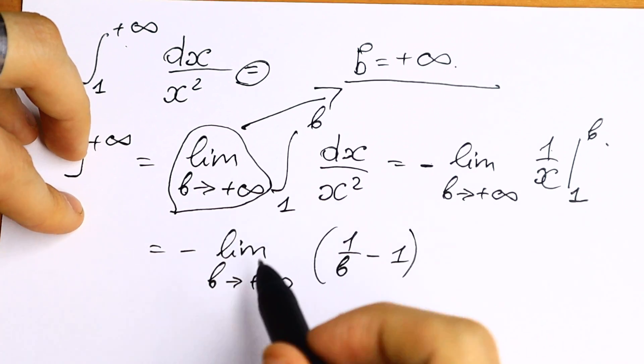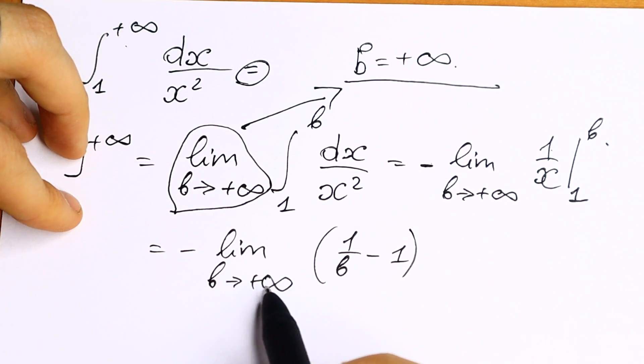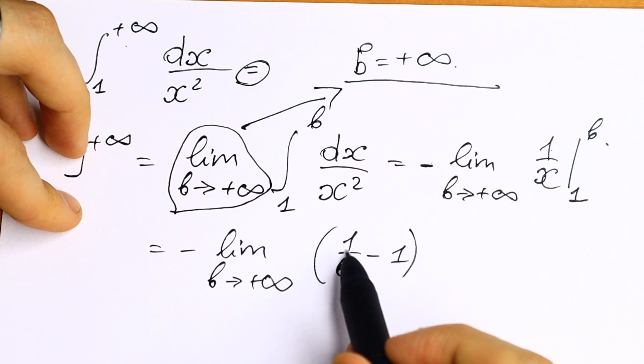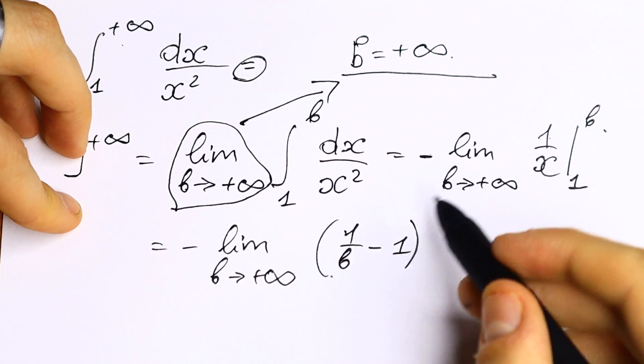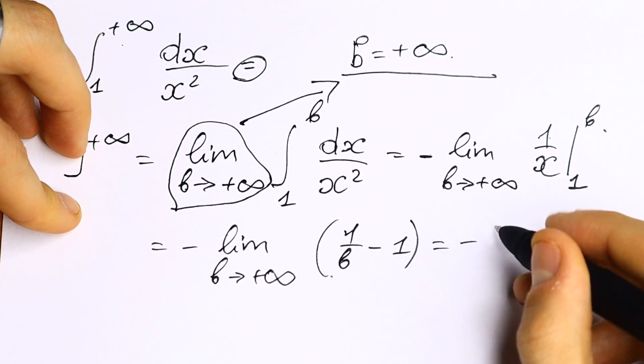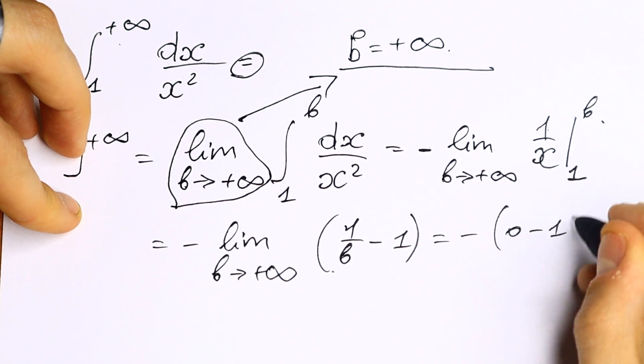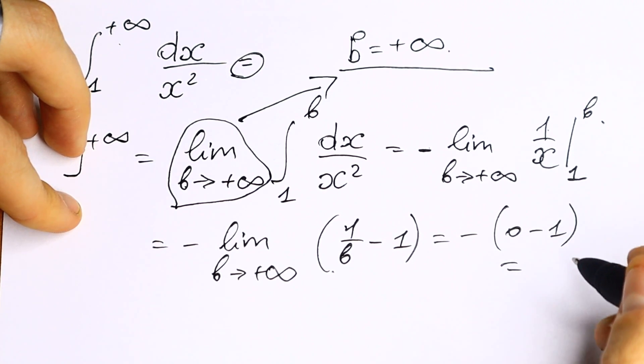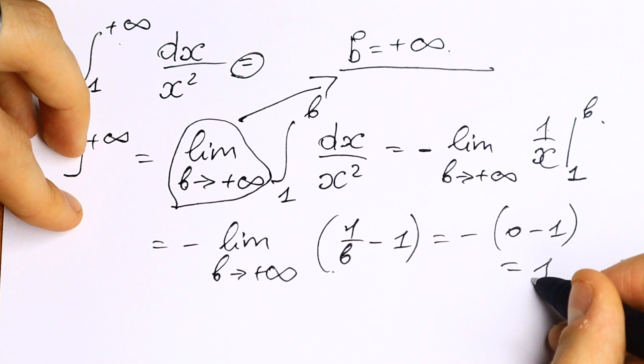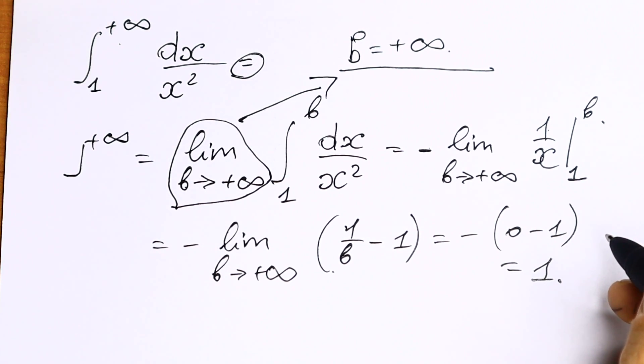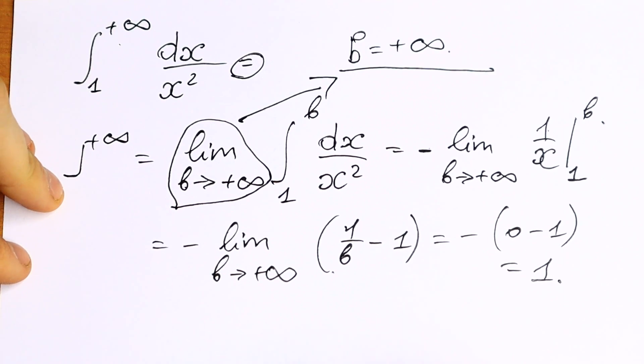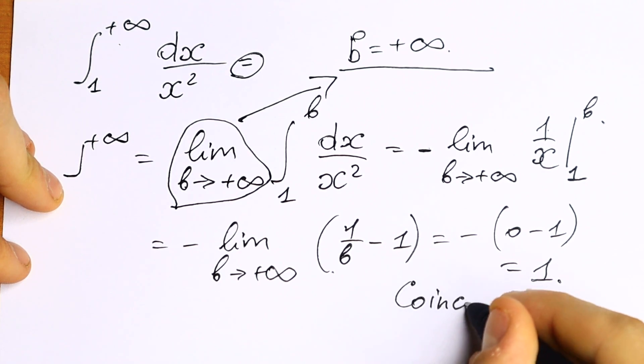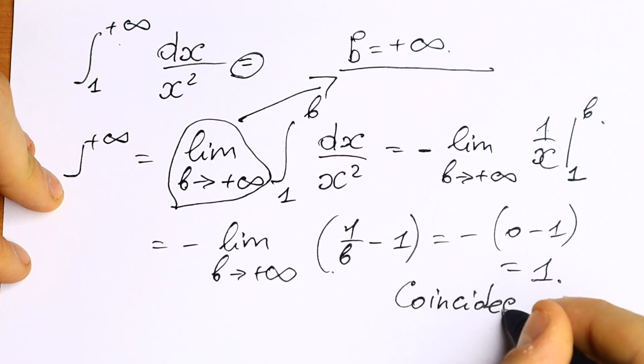Talking about the limit, we need to plug in this infinity. First, instead of this b, we'll have 1 over infinity equals 0. So 0 minus 1 will be minus (0 minus 1). And if we simplify this, we will have that our limit equals 1.